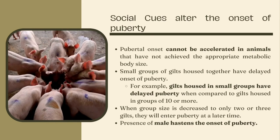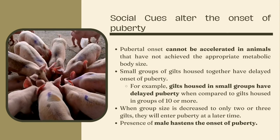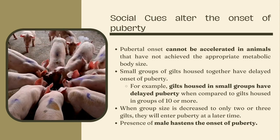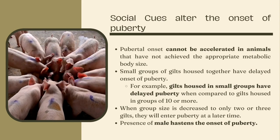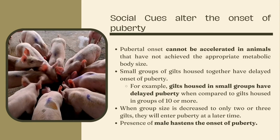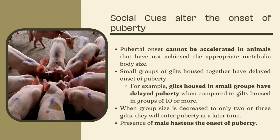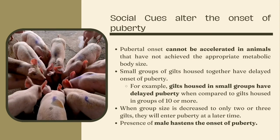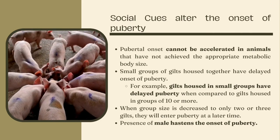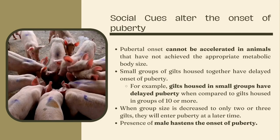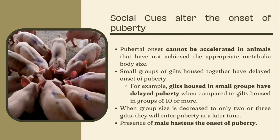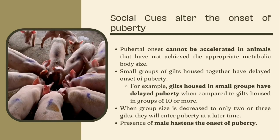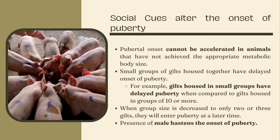Gilts housed in small groups have delayed puberty compared to gilts housed in groups of 10 or more. These females will enter puberty at the expected time of 28 weeks. Nevertheless, if the group size is reduced to only two or three gilts, they will enter puberty at a later time than their counterparts housed in larger groups. Also, the presence of males hastens the onset of puberty. Gilts housed in small groups and exposed to a boar will enter puberty at an earlier age than either their large or small-grouped counterparts not exposed to a boar. The important point is that male presence, either in visual contact with females or indirect physical contact, will hasten puberty in gilts.